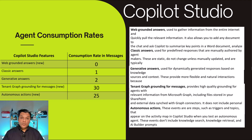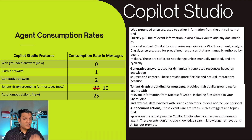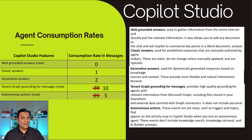However, the new announcement changes all of it. Here are the new consumption rates: for tenant graph grounding for messages, instead of 30 it is now only 10 — a third of the original price. For autonomous actions, it goes from 25 down to just 5 — a fifth of the original. As you can see, both of these have significantly dropped.